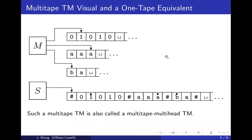The dot indicates the head location on each simulated tape. For instance, the head location of tape 1 might be on position one, tape 2 on the third symbol, and tape 3 on the first b. For each move of M, S does many more moves, but it is still doable — it just takes more time.